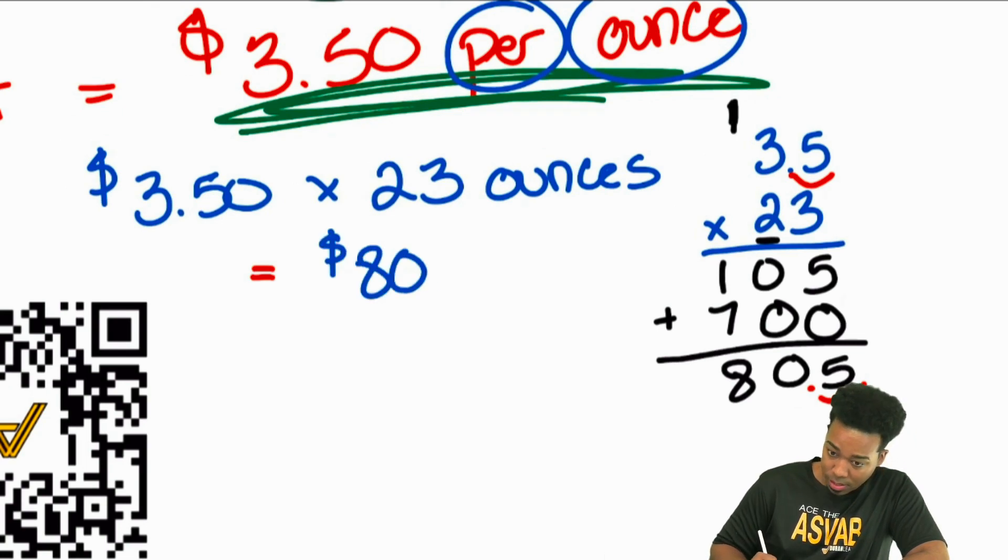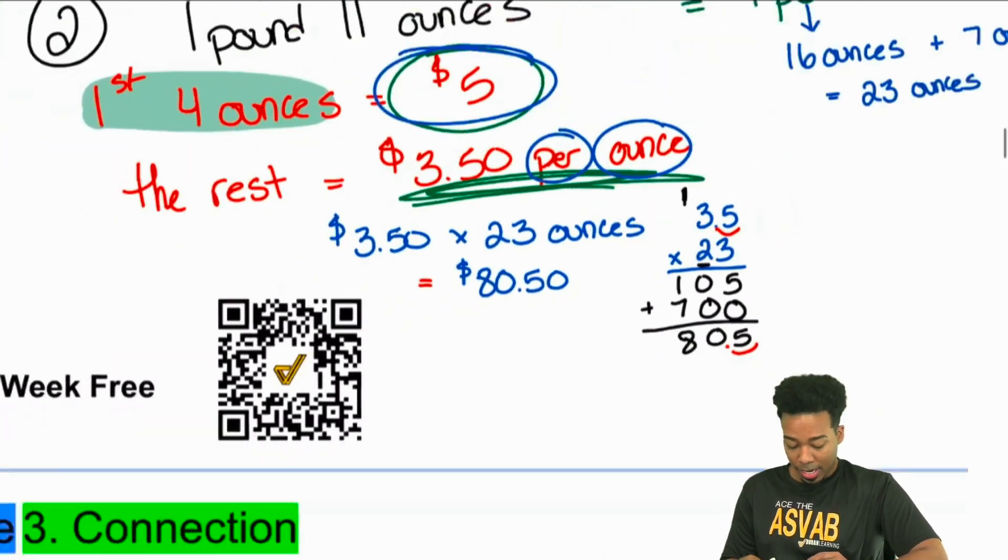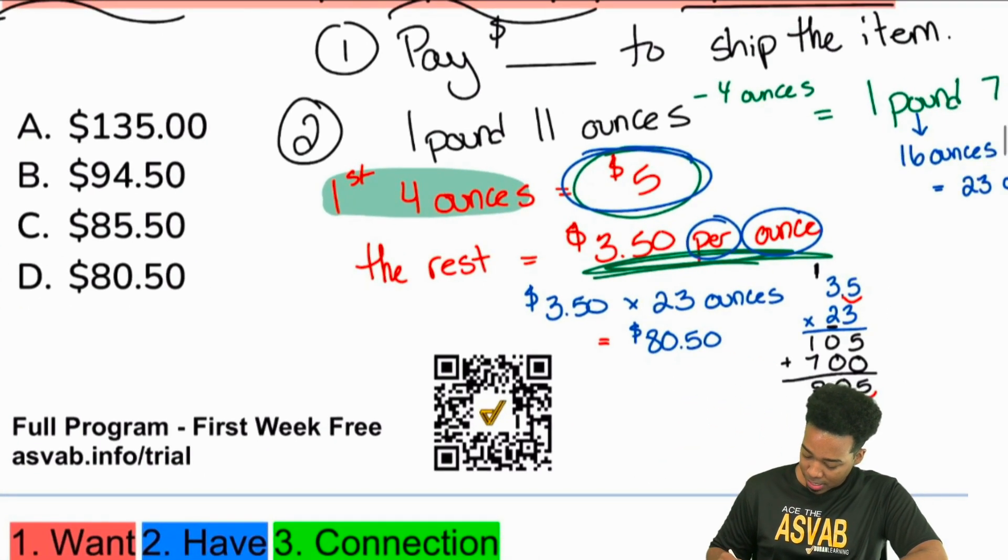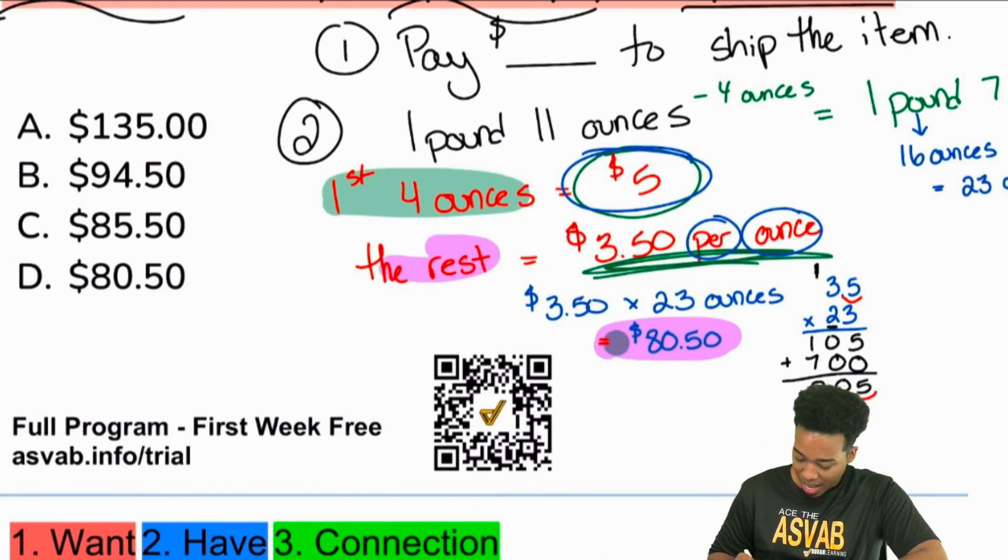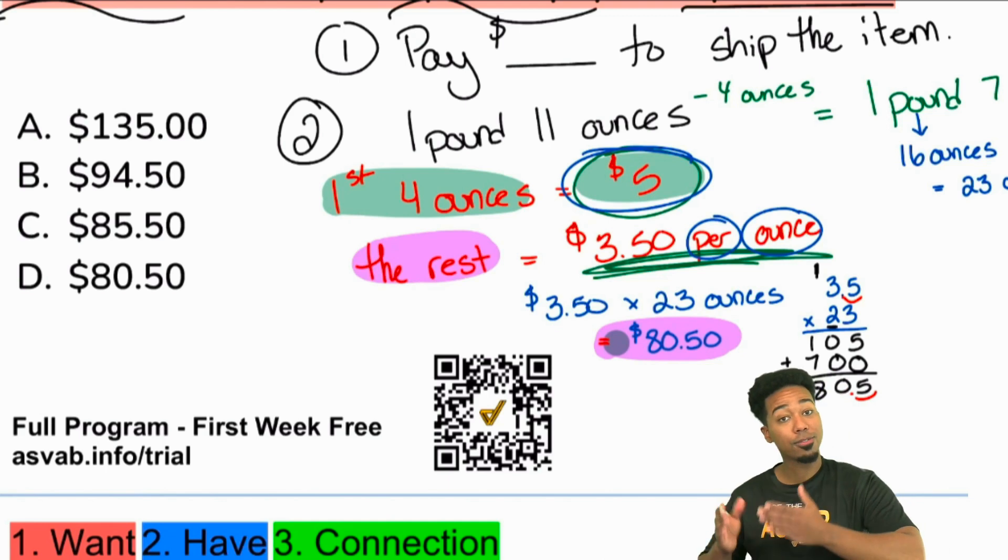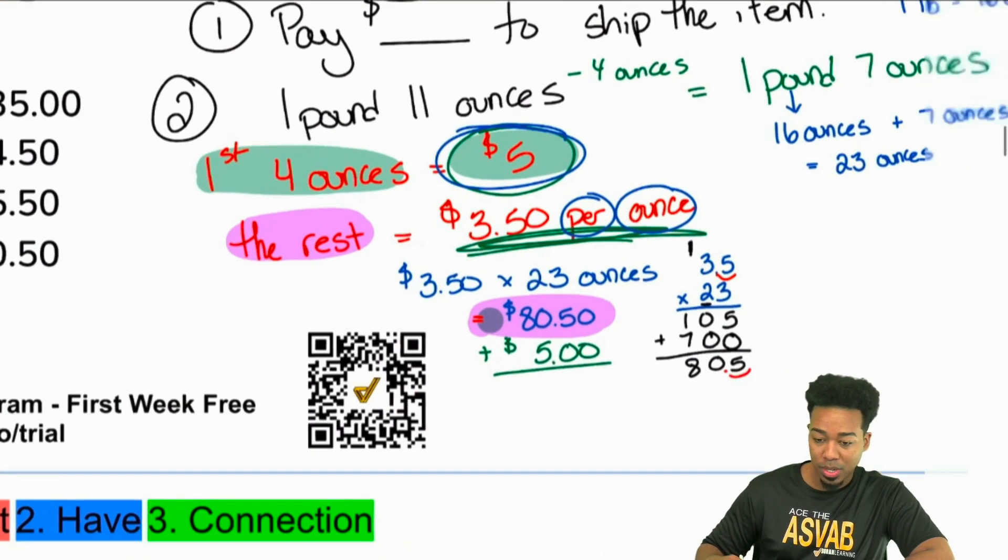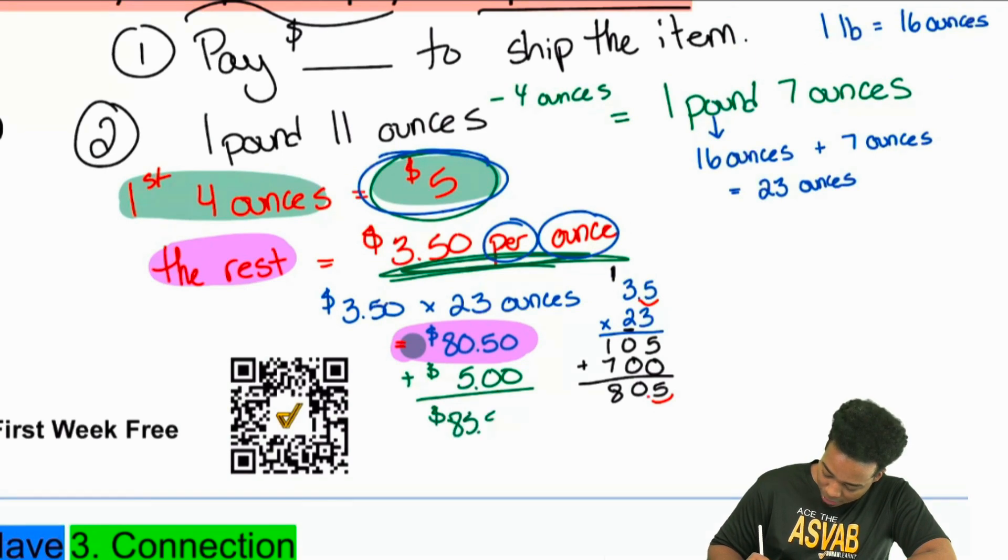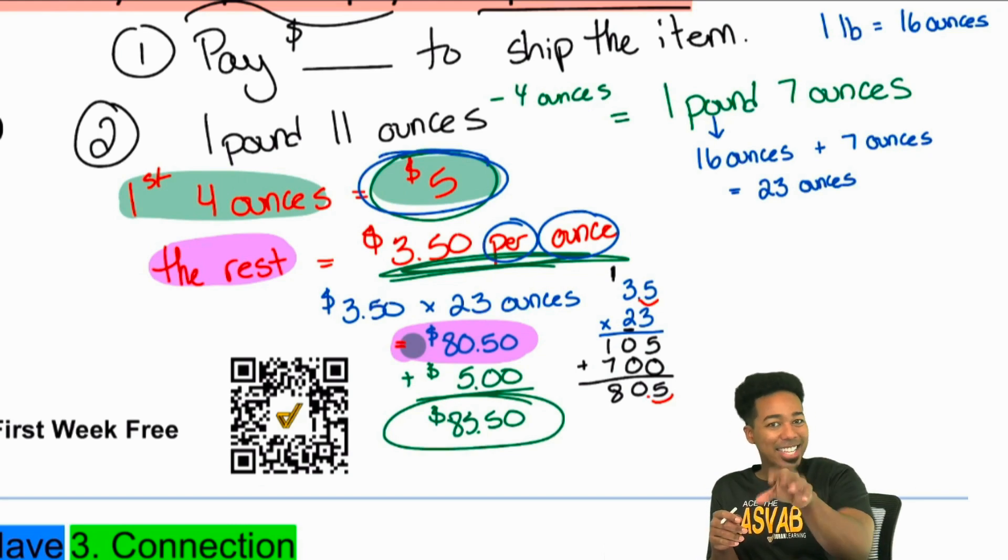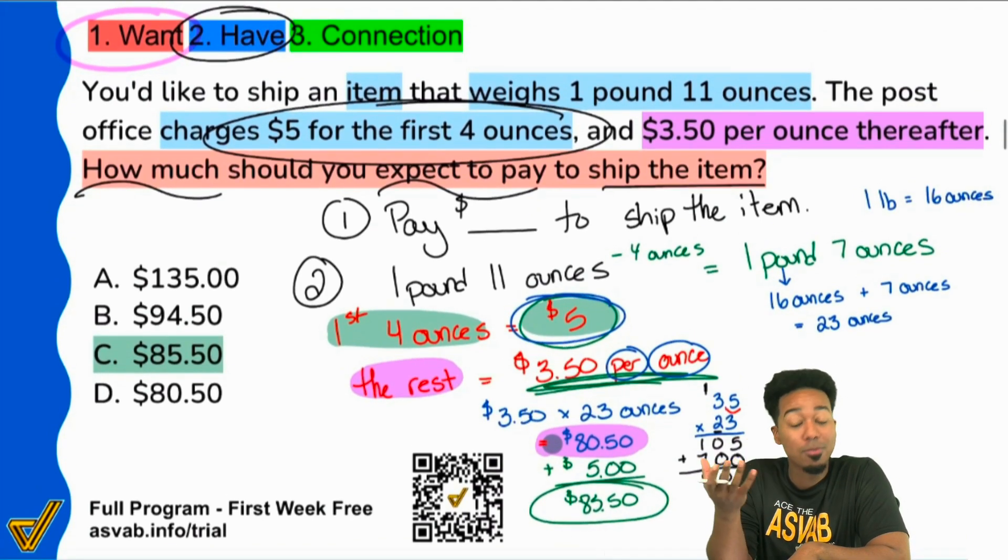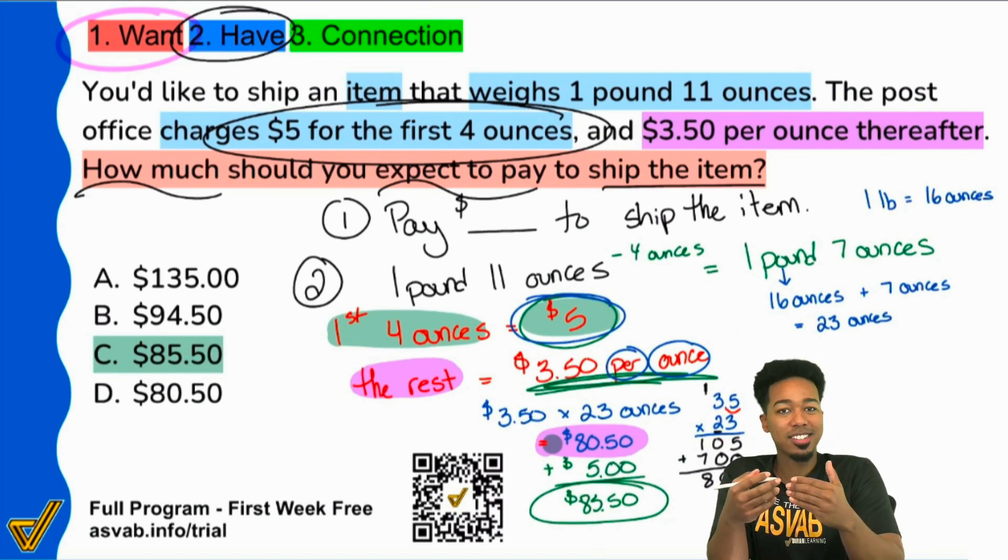It's going to be $80.50. But remember, you might be looking at the answer choices and you might be thinking, hey coach, looks like that's going to be it. No, you're absolutely wrong. Because this $80.50 covers the rest. We need to incorporate the $5 from the first 4 ounces. And so once we have that, once we add the $5 back for the first 4 ounces, we see that we'll receive $85.50. So go ahead and let me know in the comments, did that get you? Did you do the math correctly only to forget that $5 at the end? Because the correct answer is actually going to be C, $85.50. Is that something that has gotten you? Has it gotten you before? Recognizing the mistakes helps us grow from them.